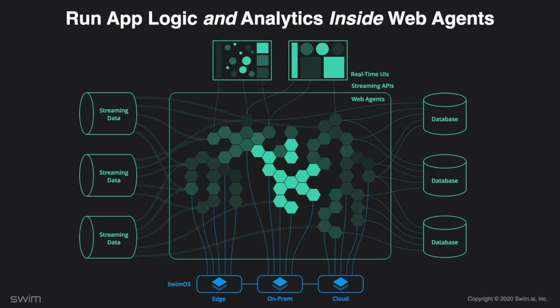Putting all the pieces together, you end up with a stateful model of your business as it exists today — evolving and unfolding — informed by your streaming data and in full context and alignment with the objectives, structure, and relationships of your business. The key to answering how you understand streaming data in the context of your business is to run your general purpose business logic and analytics inside these web agents and continuously provide the outputs to your users, keeping humans in the loop.